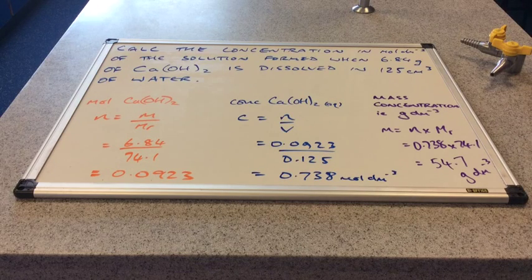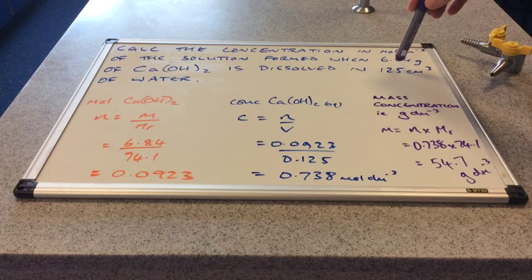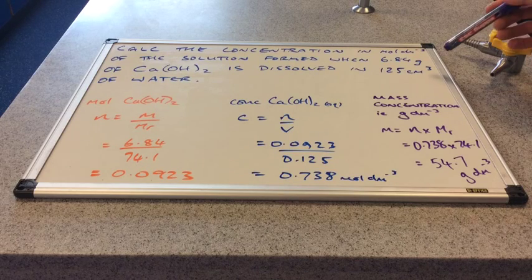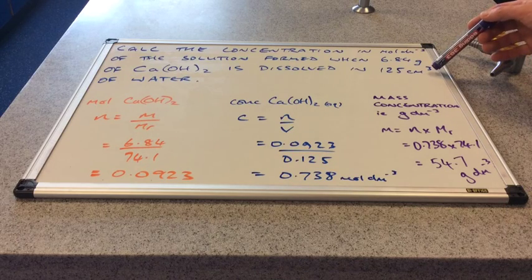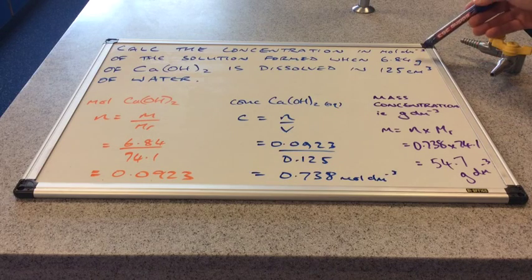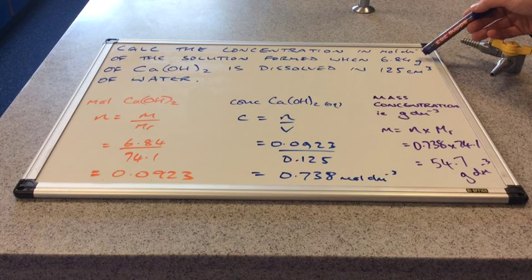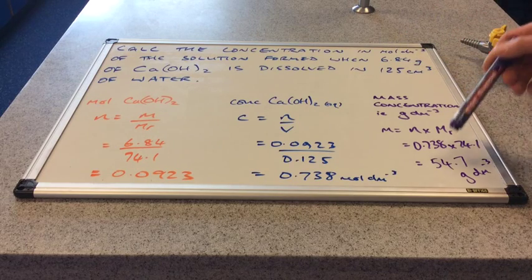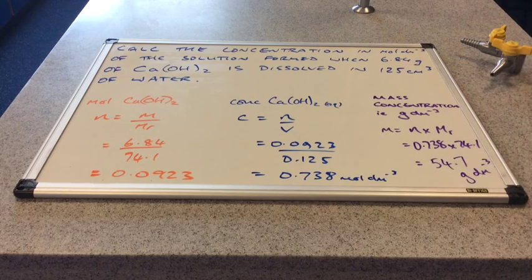If you think about the scaling factor: the 6.84 grams was dissolved in 125 cm³ of water, and we've scaled that up to how much would need to be dissolved in 1000 cm³ to keep the concentration the same. What fraction of 1000 is 125 cm³? It's an eighth. So if we increase the volume of water by a factor of 8, we increase the mass by a factor of 8. Multiply 6.84 by 8 and you get 54.7.